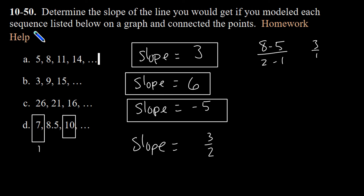And then I could do 10 minus 7 in the numerator over 3 minus 1 in the denominator, which does give me 3 over 2, 3 halves.